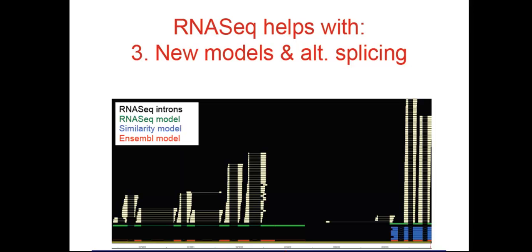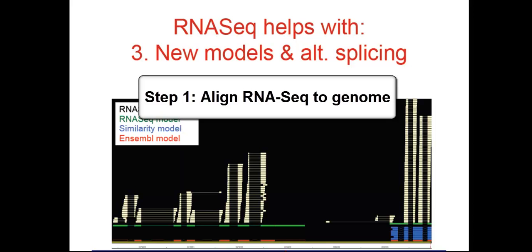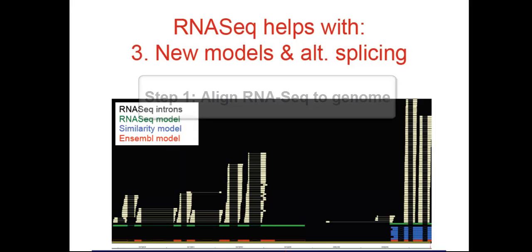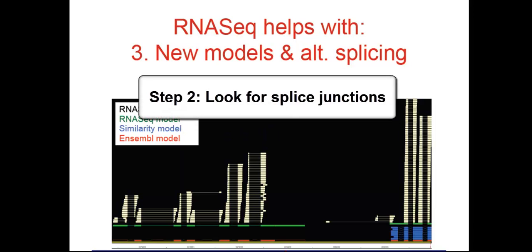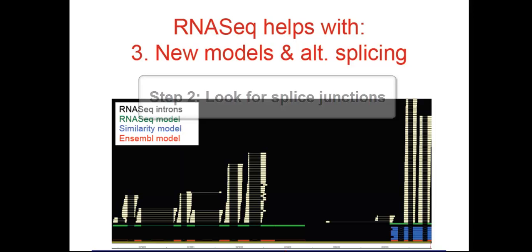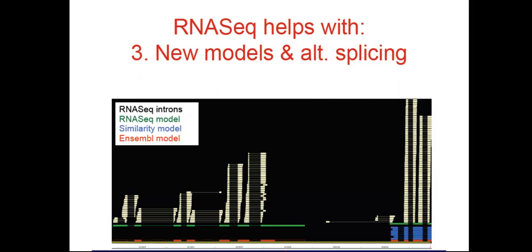We build the RNA-Seq transcript models using a pipeline that we've developed in-house. We first align the tilapia reads using BWA to indicate where transcription is seen on the genome. Next, we look within those transcribed regions for introns to find splice junctions. This is done by a secondary alignment using Exonerate, which is splice-aware.